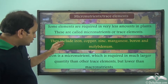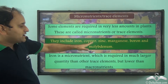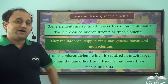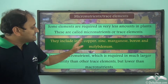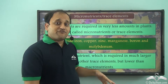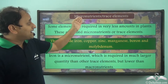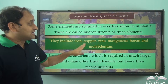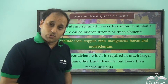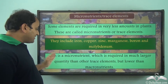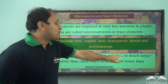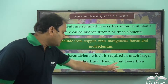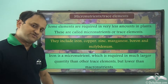These include iron, copper, zinc, manganese, boron and molybdenum. These are only a few of the different micronutrients required by plants, so we are just discussing some of the major ones. Iron is a micronutrient which is required in much larger quantity than other trace elements, but lower than macronutrients.